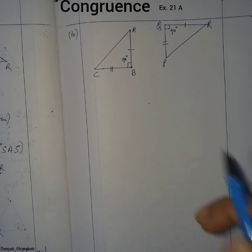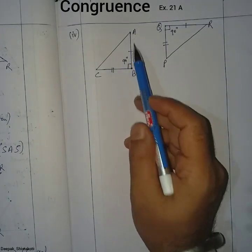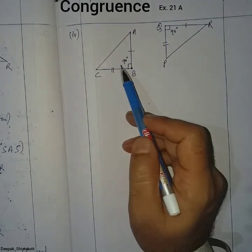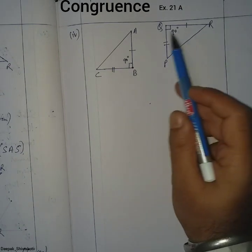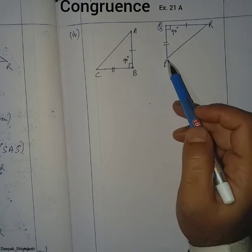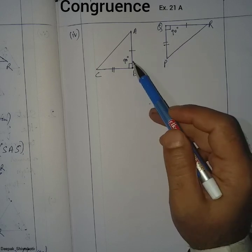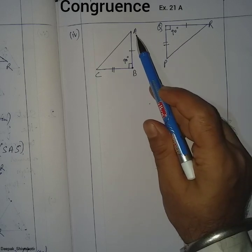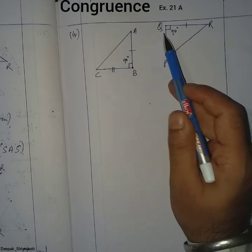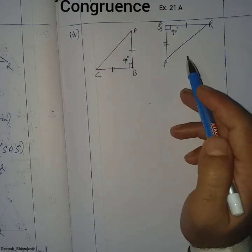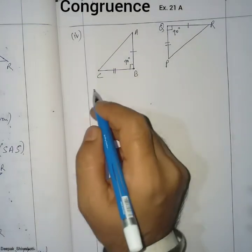Next is question number 4. In this figure, triangle ABC and triangle RQP are shown. We refer to the 90-degree angle and name the triangles ABC and RQP.